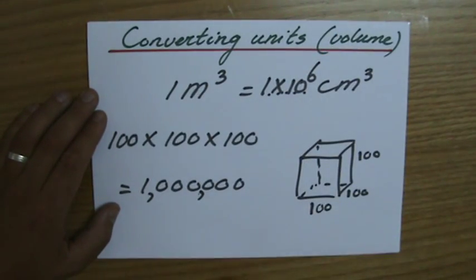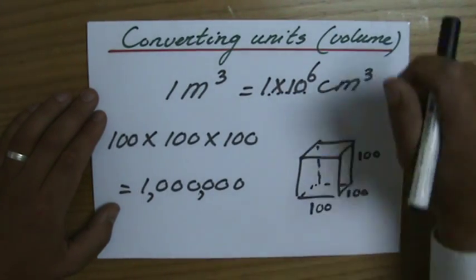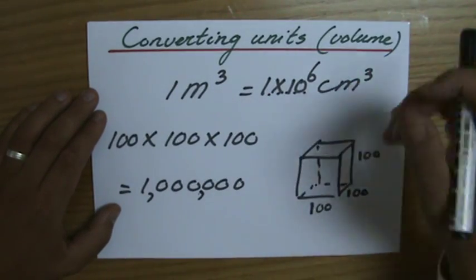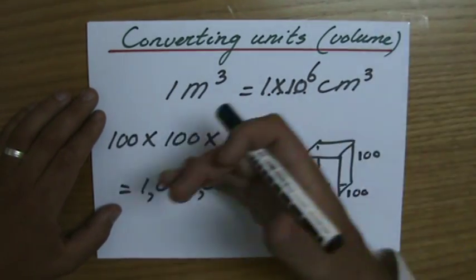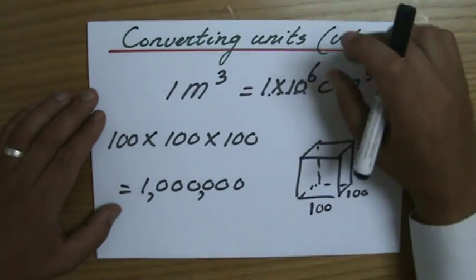Draw a cube, of one by one by one. And then you can work it out just by converting each length individually. And then multiplying at the end again. You can't go wrong.